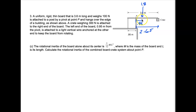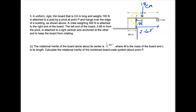The important part is this 0.85 — this is the distance from the center of mass of the rod itself over to the pivot point. We're going to use that here in just a second. We want to find a couple of things. First, we have to find the moment of inertia of the board itself.